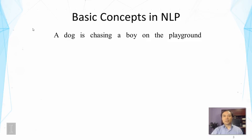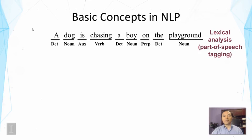First, the computer needs to know what the words are and how to segment them. In English, this is easy — we just look at the spaces. Then the computer needs to know the syntactical categories of these words. For example, 'dog' is a noun, 'chasing' is a verb, 'boy' is another noun, etc. This is called lexical analysis. Tagging words with syntactic categories is called part-of-speech tagging.